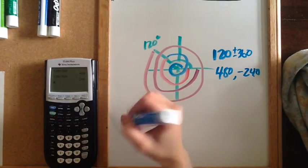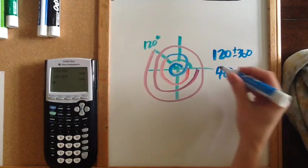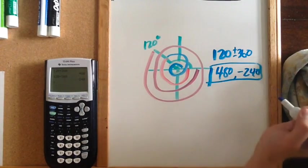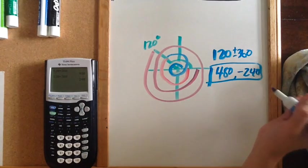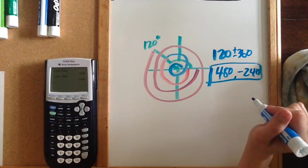We could keep going and keep going, but these two are the ones that you would probably see if you were given a multiple choice test, just the closest ones to that.